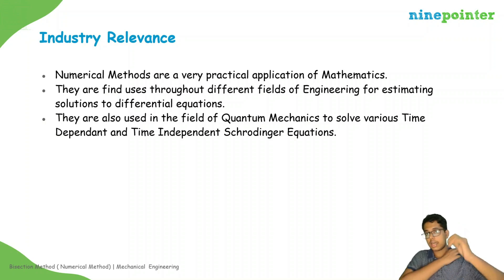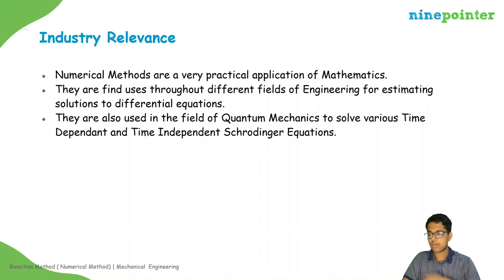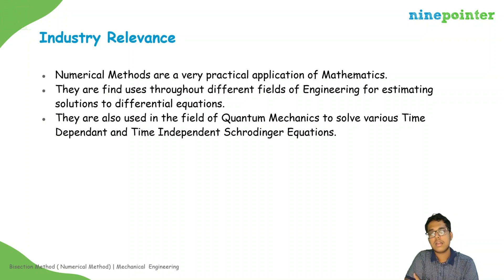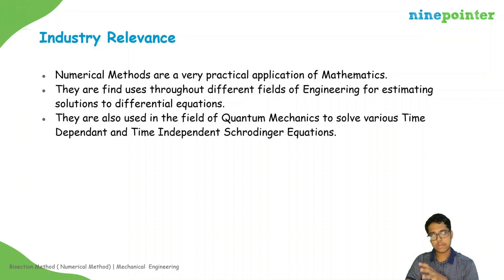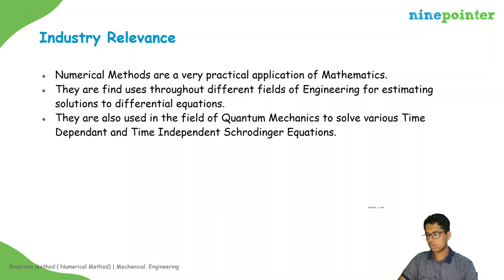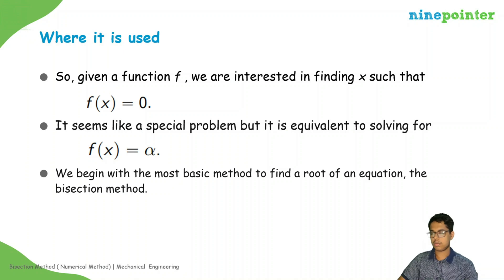There are time-dependent and time-independent Schrödinger equations in quantum mechanics which cannot be solved exactly. So those differential equations need to be approximated, and those approximations are done using numerical methods. Let me show you where it is used.